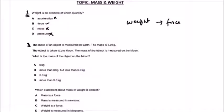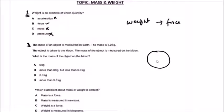Question number two: The mass of an object is measured on Earth and the mass is 5 kg. The object is then taken to the Moon and the mass is measured again. What is the mass of the object on the Moon? The mass measured on Earth is 5.0 kg.